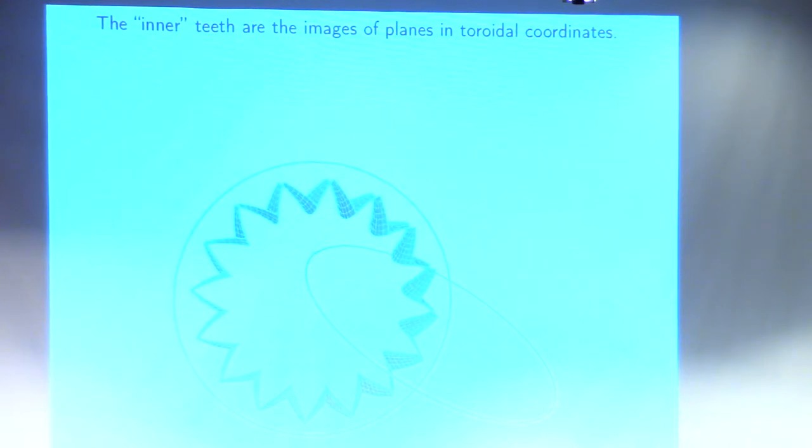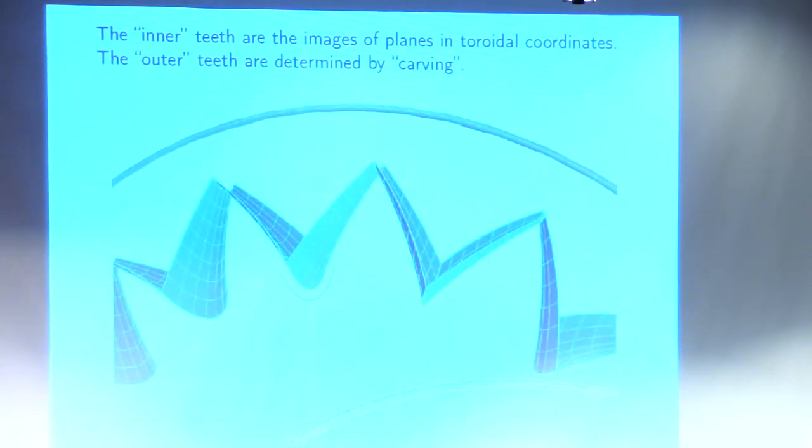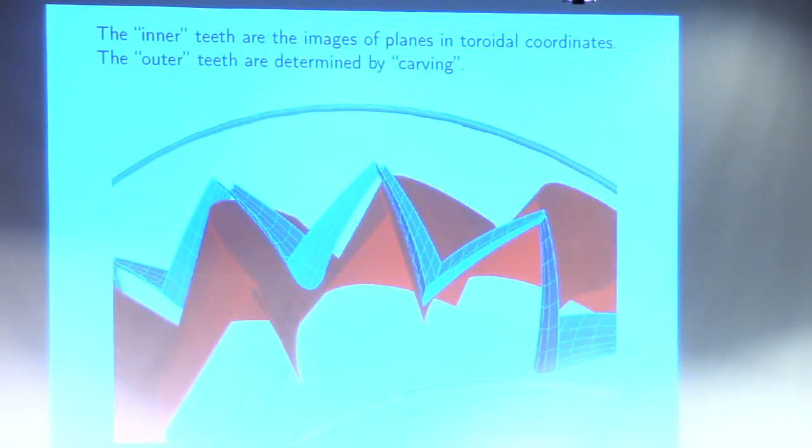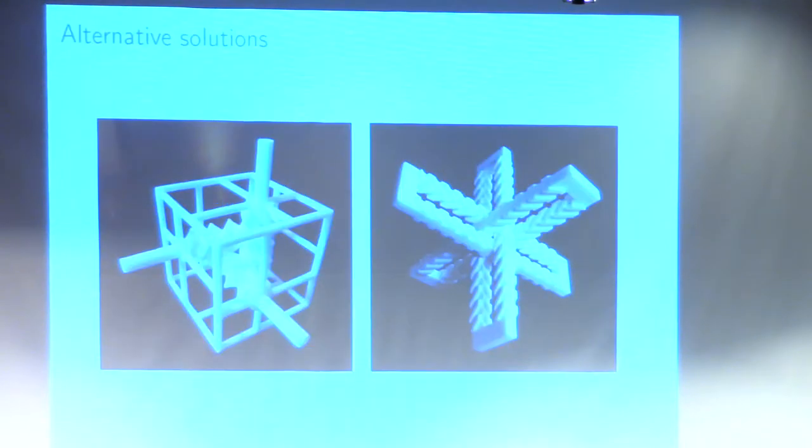So these are one set of teeth that we just sort of made something up. If you imagine toroidal coordinates, you've got the angle around here, the angle around this way, and then the radius. In toroidal coordinates, these are just pieces of planes. Then we use these things to carve out something on the other ring. We generate these curves and generate these teeth, and then put them together. Of course, after we did this, we found much easier ways to solve this problem.